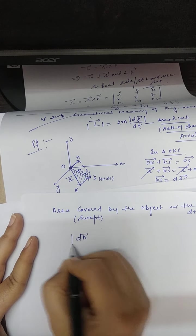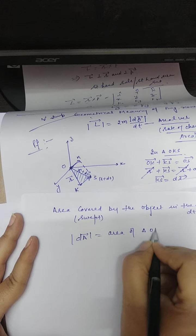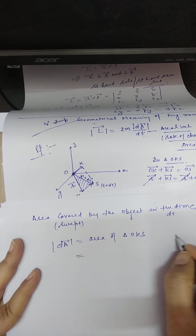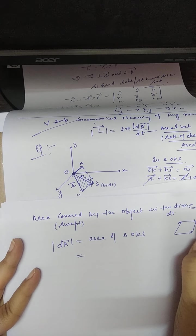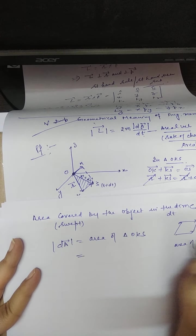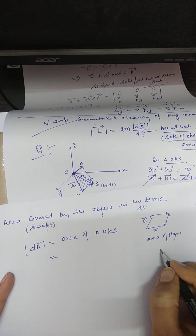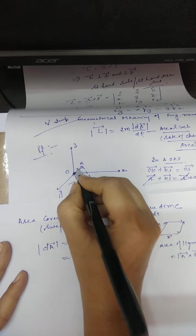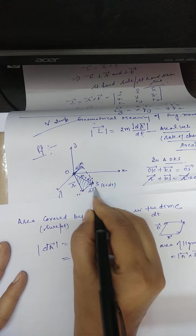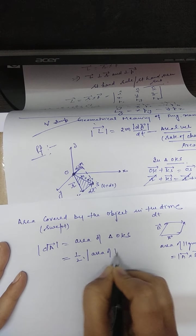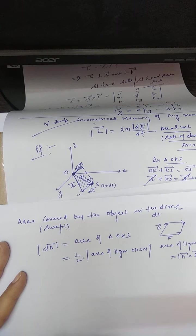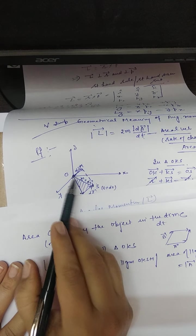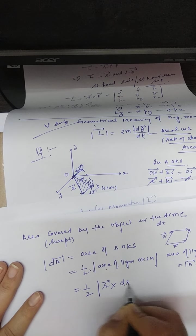We use the significance of the cross product: if two vectors represent adjacent sides of a parallelogram, then the area of the parallelogram equals |a × b|. So the area of triangle OKS is half the area of parallelogram OKSM. The adjacent sides are r and dr, so dA = ½|r × dr|.